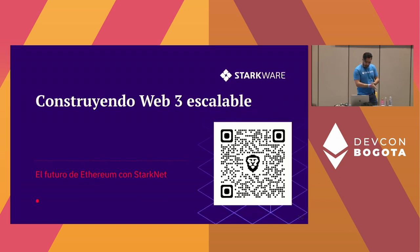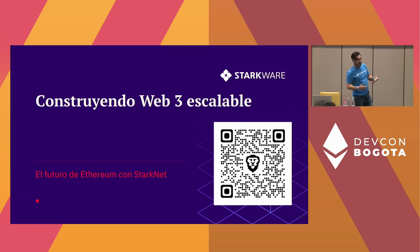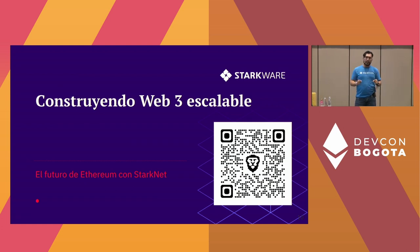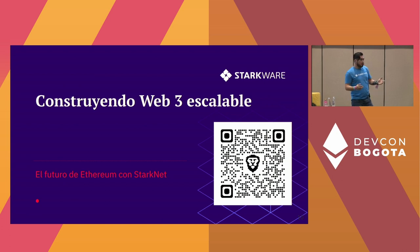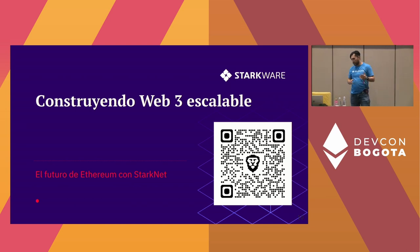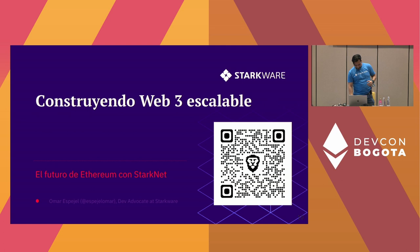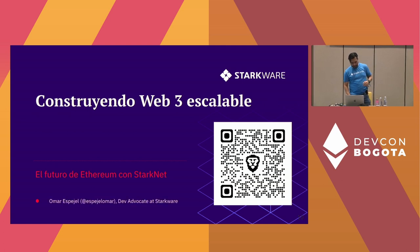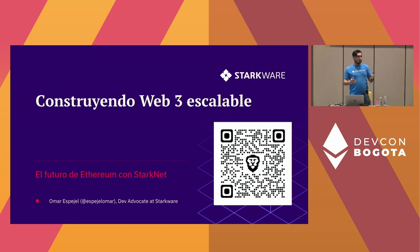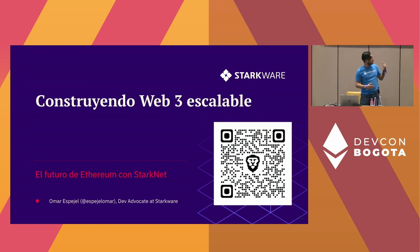StarkNet has a lot of potential. You can create and deploy on it right now. Today we'll be creating a voting application that we're going to try on StarkNet. Cairo is a different language, but it's also a language that everybody can use — it's not hard at all. My name is Omar Spiegel, I'm a developer advocate at StarkWare. The goal of today is for you to get the resources to start studying Cairo, and also to make a small example of a voting application.